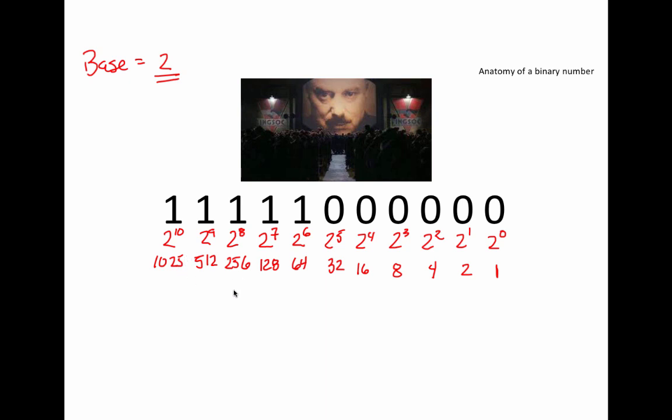So, now we have all the tools that we need in order to do our calculation. We know that this value, which is in binary, in a decimal number system is going to be 1024 plus 512